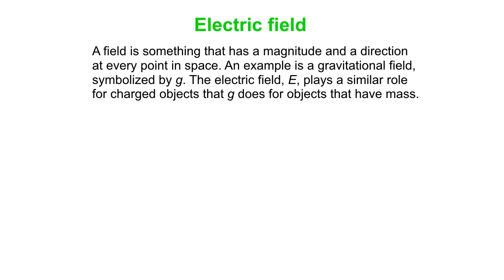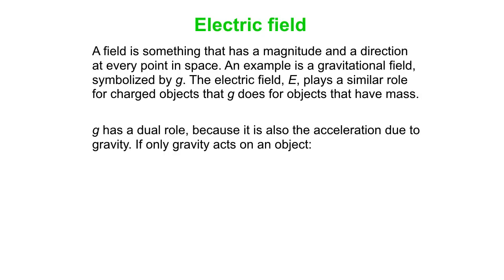What is a field anyway? It's something that has a magnitude and a direction at every point in space. A good example is the gravitational field, symbol lowercase g. The electric field, capital E, plays a similar role for charges that g does for objects that have mass. Now g has a dual role because it's also the acceleration due to gravity. If gravity is the only thing acting on an object, then the gravitational force mg equals ma, so the m's cancel out and a equals g.